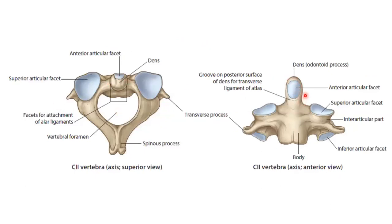The dens is believed to be a part of the body of the C1 vertebra (atlas) which has fused with the body of the C2 vertebra. So the dens, or odontoid process, projects from the body of C2. C2 also has a thick bifid spine, a vertebral foramen, and a superior articular facet which articulates with the C1 vertebra, forming the atlanto-axial joint.